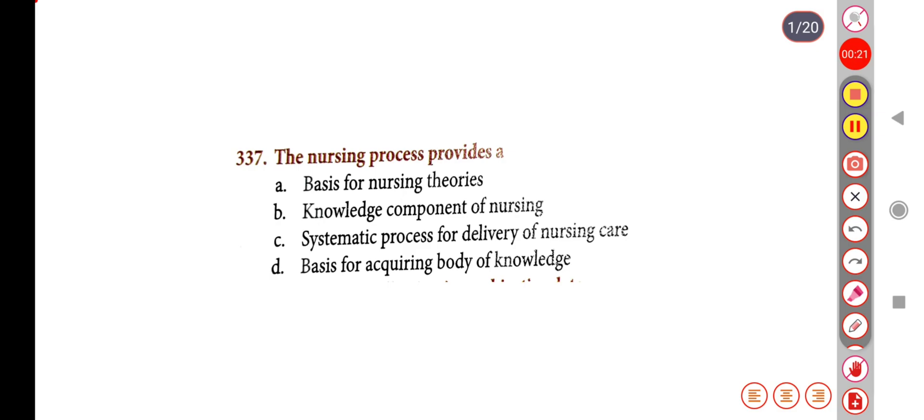The nursing process provides a — Option A: Basis for Nursing Theories. Option B: Knowledge Component of Nursing. Option C: Systemic Process for Delivery of Nursing Care. Option D: Basis for Acquiring Body of Knowledge. Correct answer is Option C: Systemic Process for Delivery of Nursing Care.